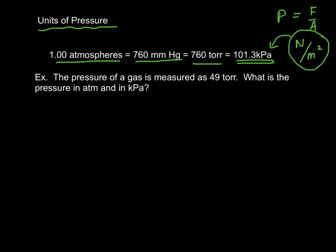the pressure of a gas is measured as 49 torr. What's the pressure in ATM and in kPa? So we'll just take our 49 torr and do a little dimensional analysis. And one atmosphere is 760 torr. And that's an exact number. So that'll give us 0.064 ATM.